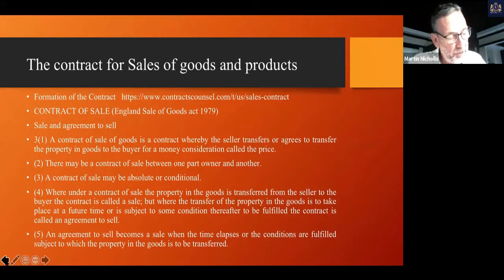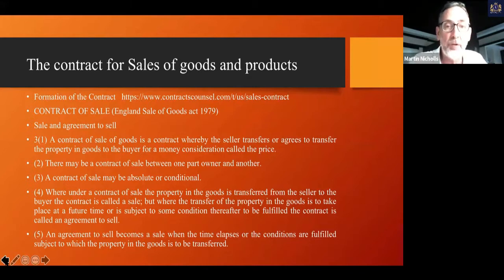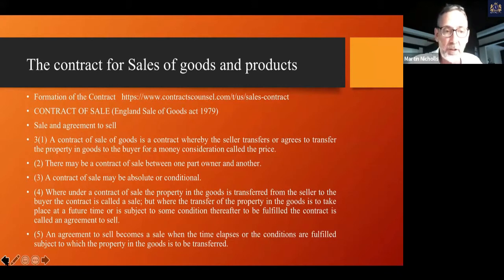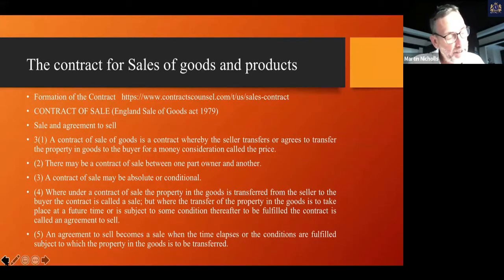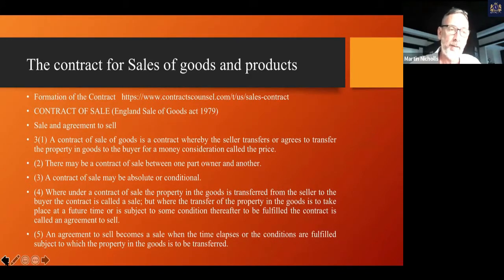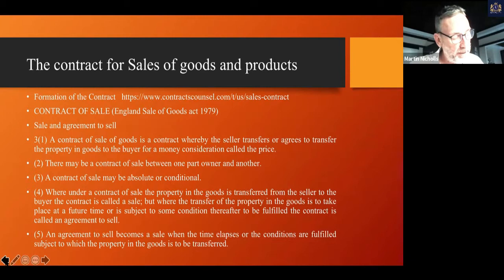So: number one — name it 'sales contract'; number two — define every party; number three — a description of the service or product; number four — guarantees: what guarantees are we going to offer? And then a price — what are we going to charge or pay? We've got the offer, what each party is going to give and take, with a description of the service. Then we have penalties to ensure a proper exchange of value.